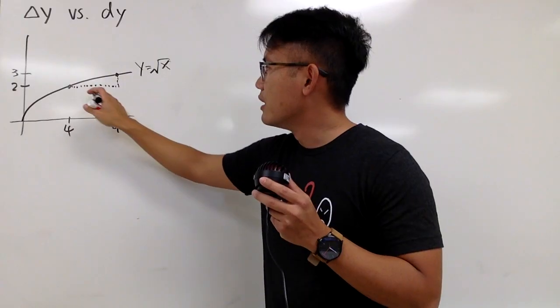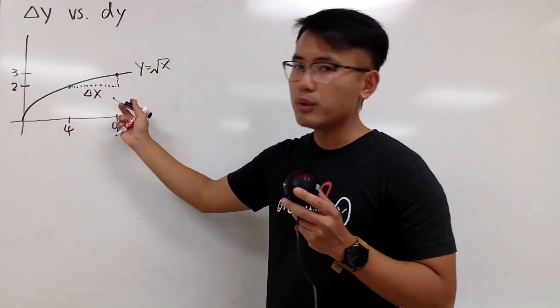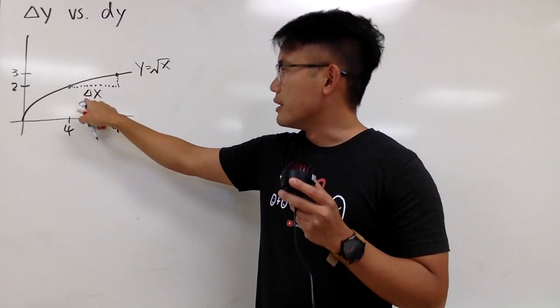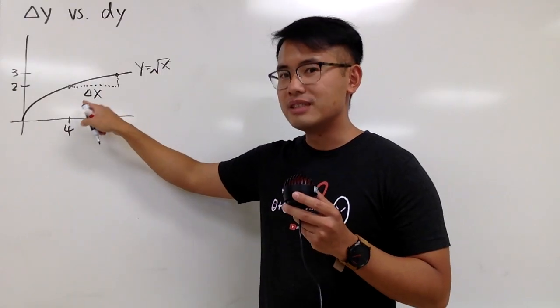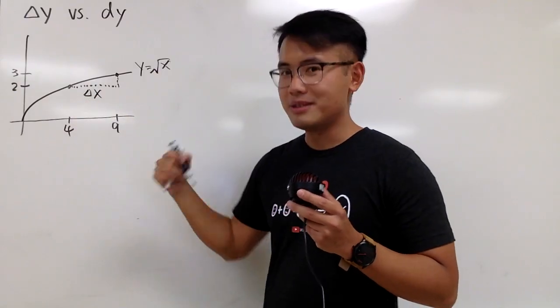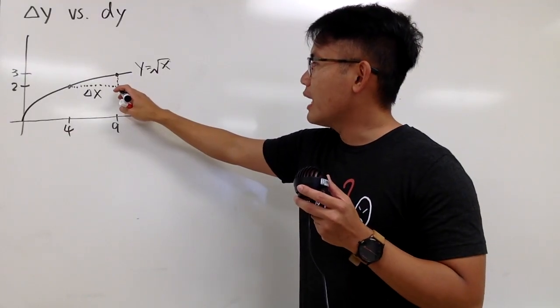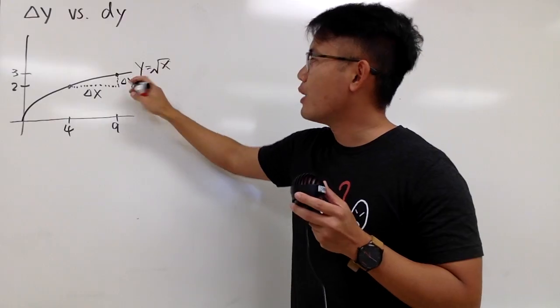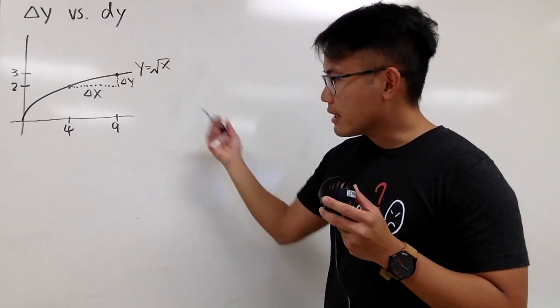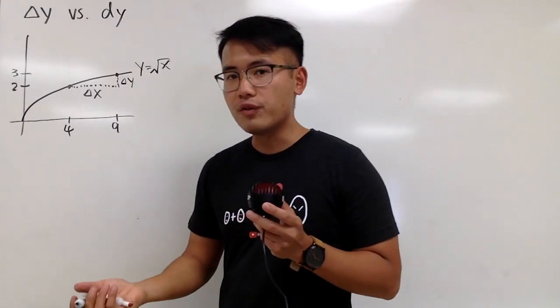This right here is precisely the change in the x values. And we can put down the delta right here to stand for change. This triangle, that's the delta, stands for change. And similarly, we went up from 2 to 3, and this right here will be the delta y. And based on this picture I can do some computation for you guys.